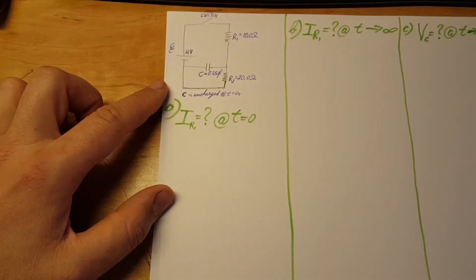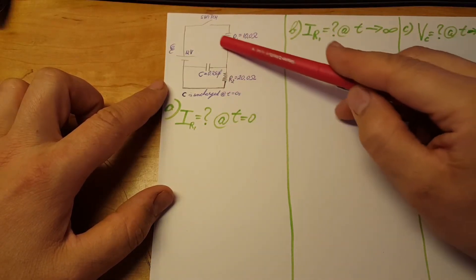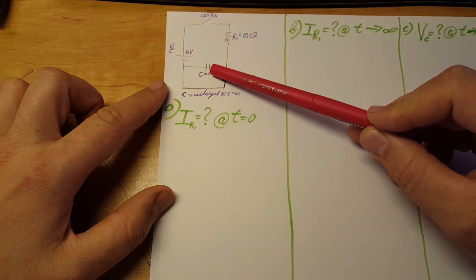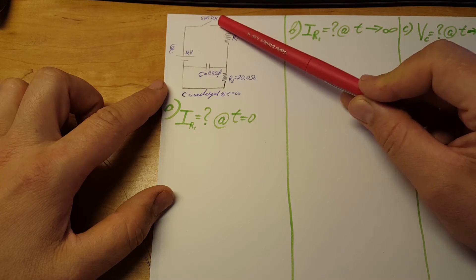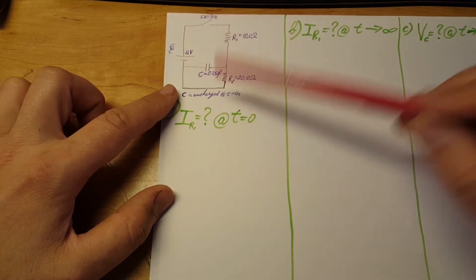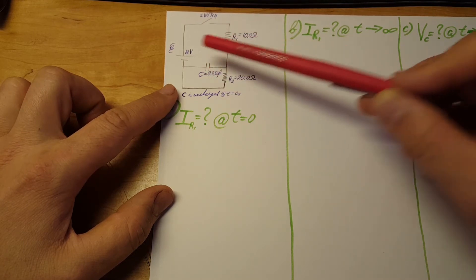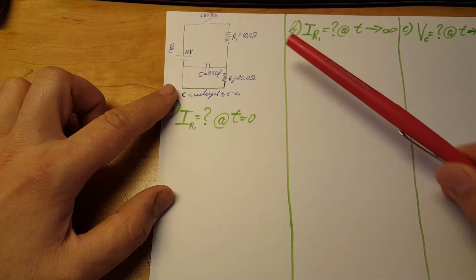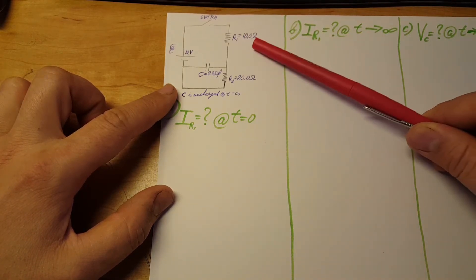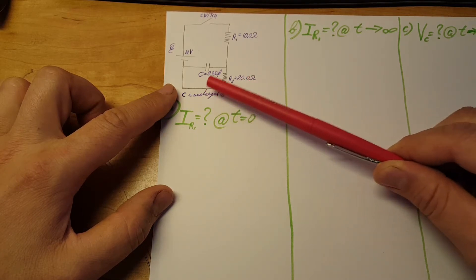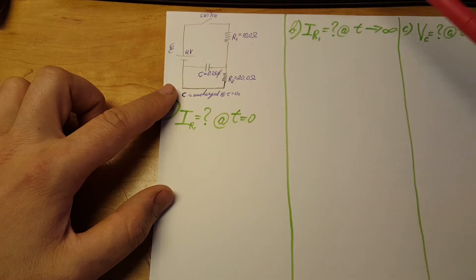This is an RC circuit problem. At t=0, our capacitor is uncharged. The switch will be closed and the circuit has one capacitor, two resistors, and one battery. The first resistor is 10 ohms, the second resistor is 20 ohms, the capacitor is 0.25 farads, and the battery is 12 volts.